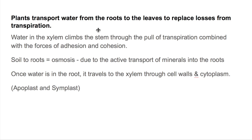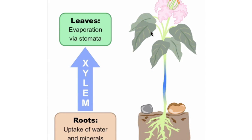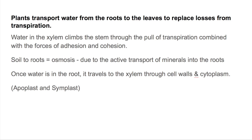The entire pathway of water inside a plant can be summarized in one statement: Plants transport water from the roots to the leaves to replace losses from transpiration. This animation shows water from the roots to the leaves, uptake of water and minerals in the roots going through the xylem, and it evaporates via the stomata in the leaves.